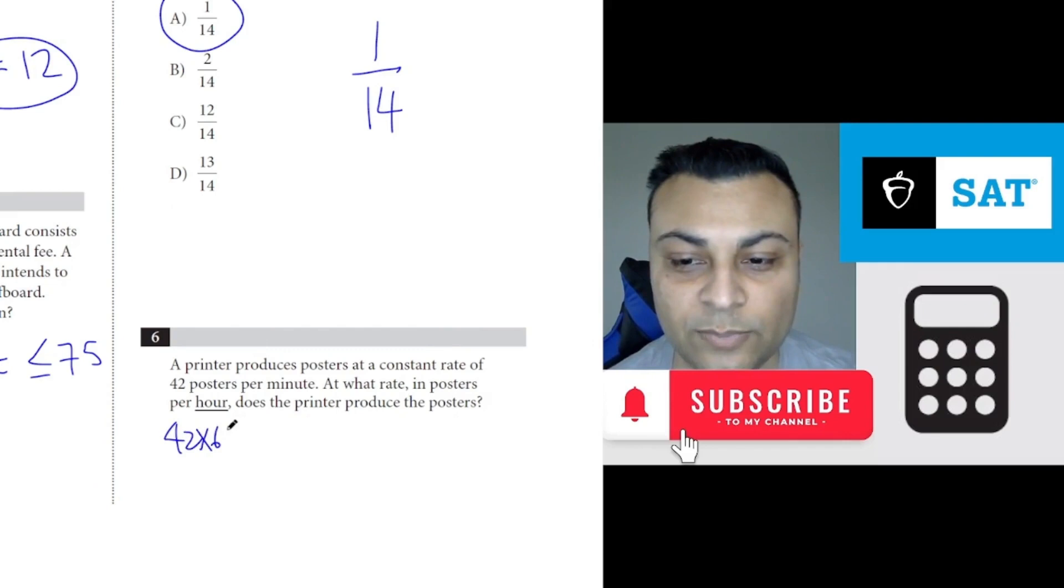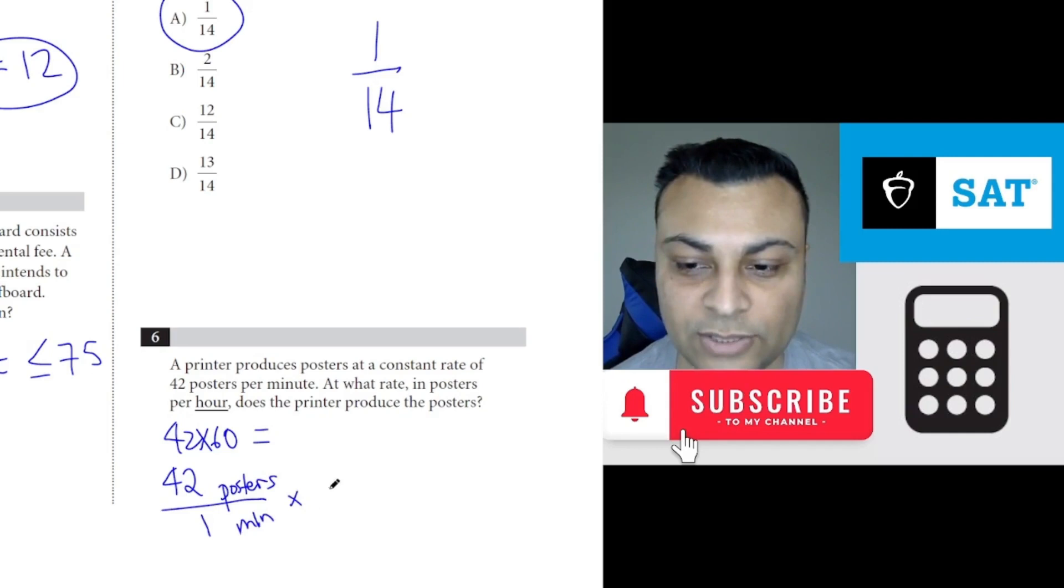But I want to show you the logic. Of course this is the answer, I'll get the calculator for this, but why is this the case? Because if you have 42 posters per minute and you'd like to get it in terms of per hour, you need minutes on top to cancel with this. One hour is 60 minutes.